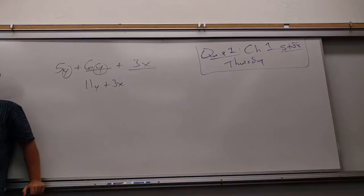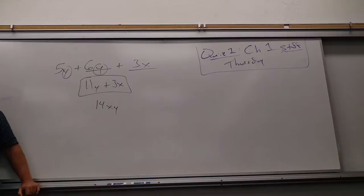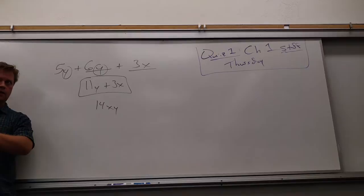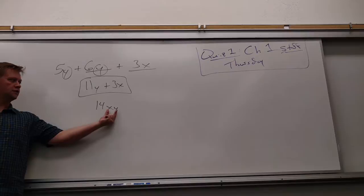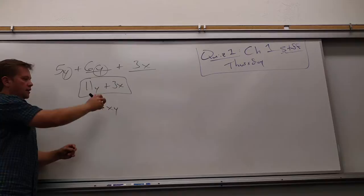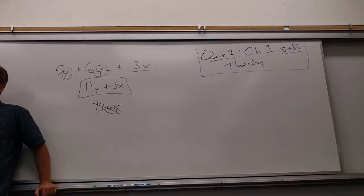Like terms are those pieces you can actually consolidate. If I have 5y's and I add 6 more y's, I've got 11 y's. But when I add those to 3x — now what did this person do wrong? They went that one extra step. What would you say to explain why it's wrong? It's not like terms. What I'd say is: I don't see any xy's, so where did you get 14 of them? I see 11 y's and 3 x's — I don't see any xy's.